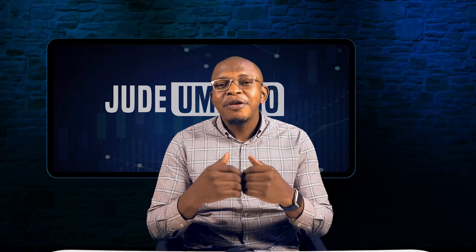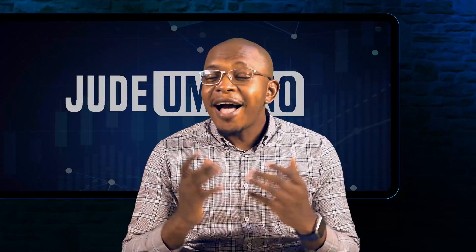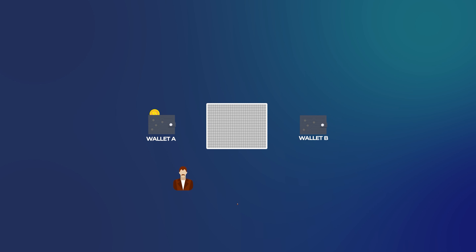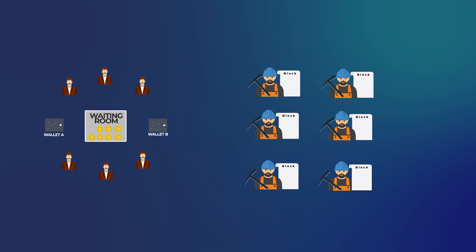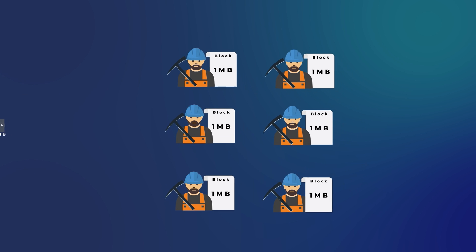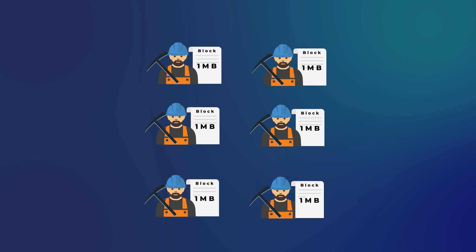When I send bitcoin from my wallet to your wallet, what happens is that the bitcoin, and all the bitcoins sent by other persons in that period, will go to what we call the unconfirmed pool in the bitcoin network — you can look at this as the waiting room. What happens next is different miners will take a book which we call a block. The size of the block is 1MB, and thus the total number of transactions we can record on this book cannot exceed 1MB. So they will start recording transactions from this unconfirmed pool into this block until it is full.